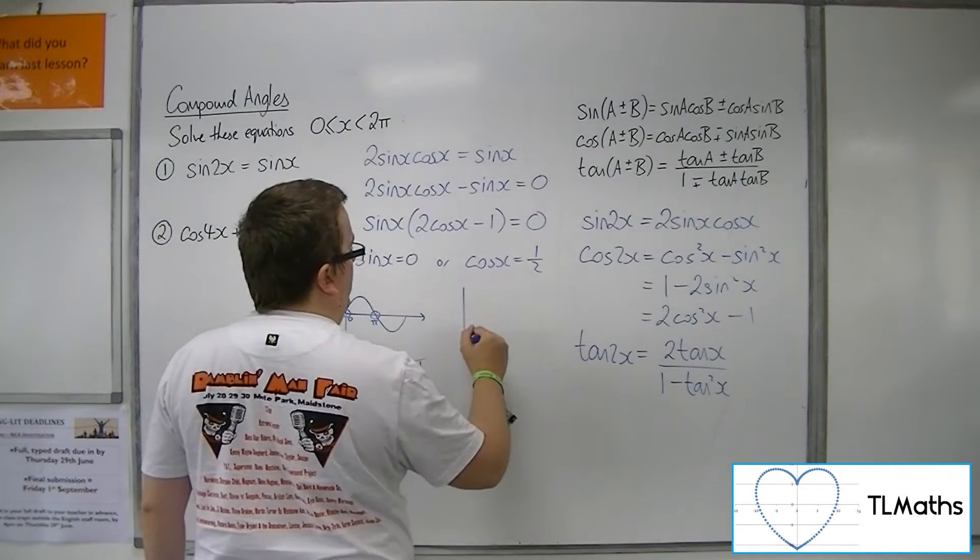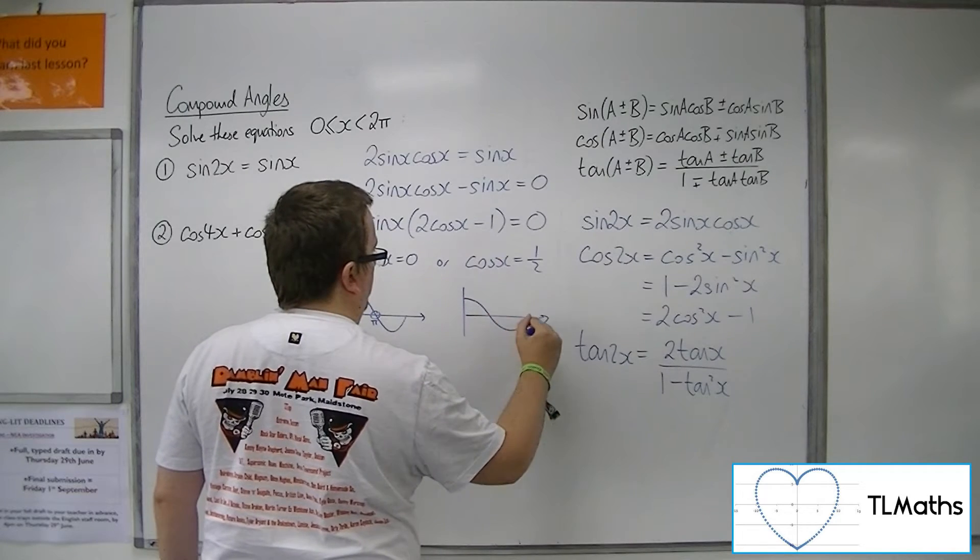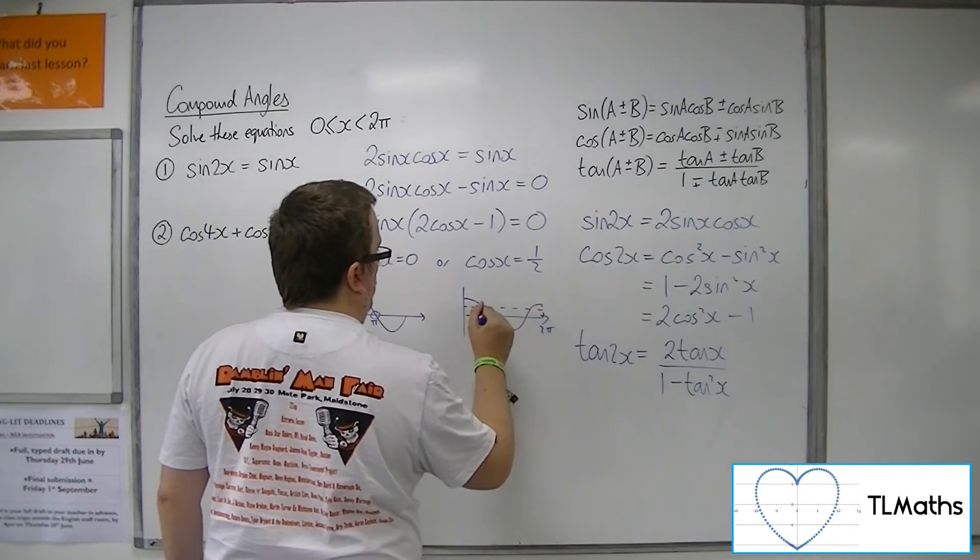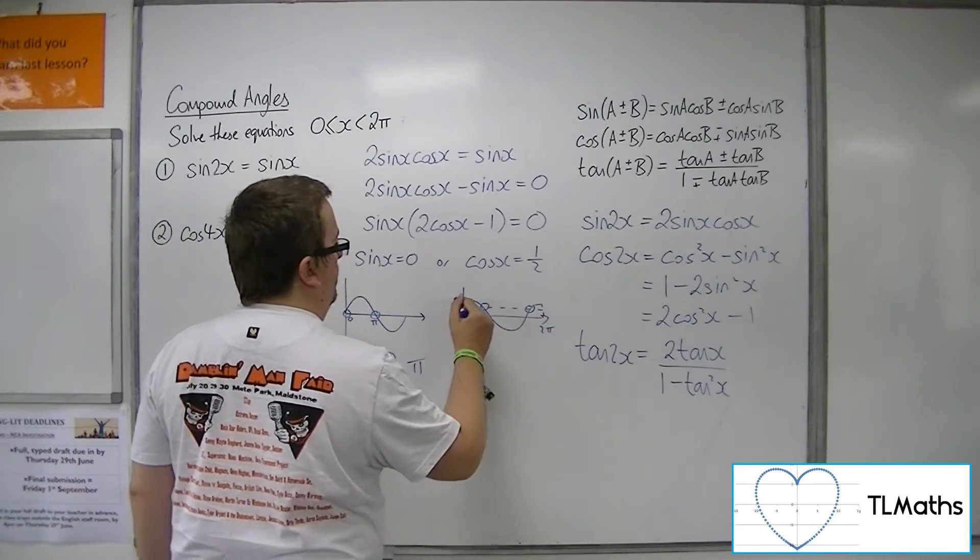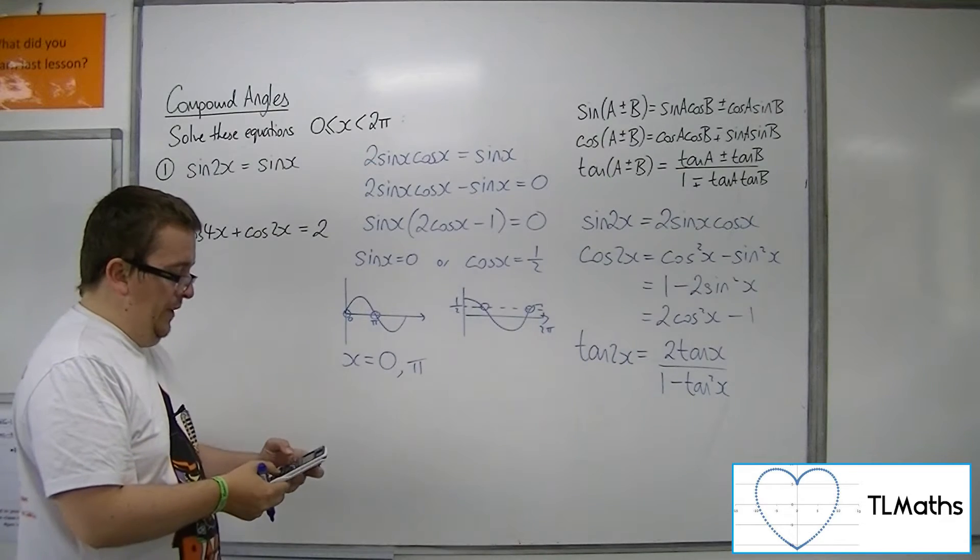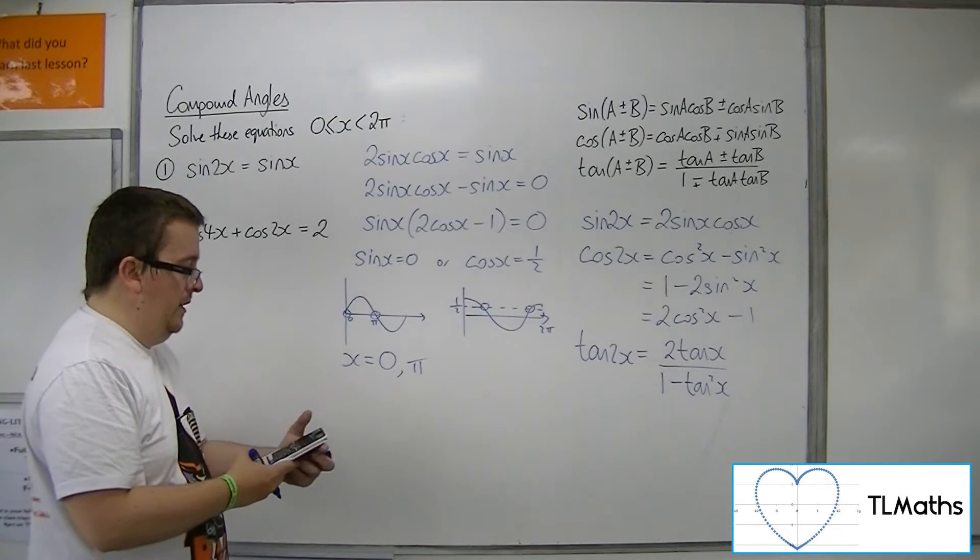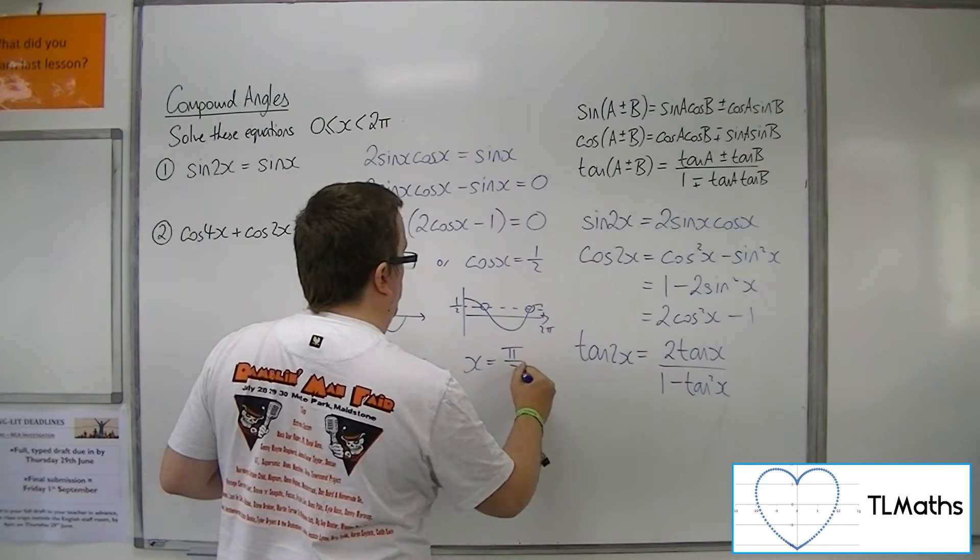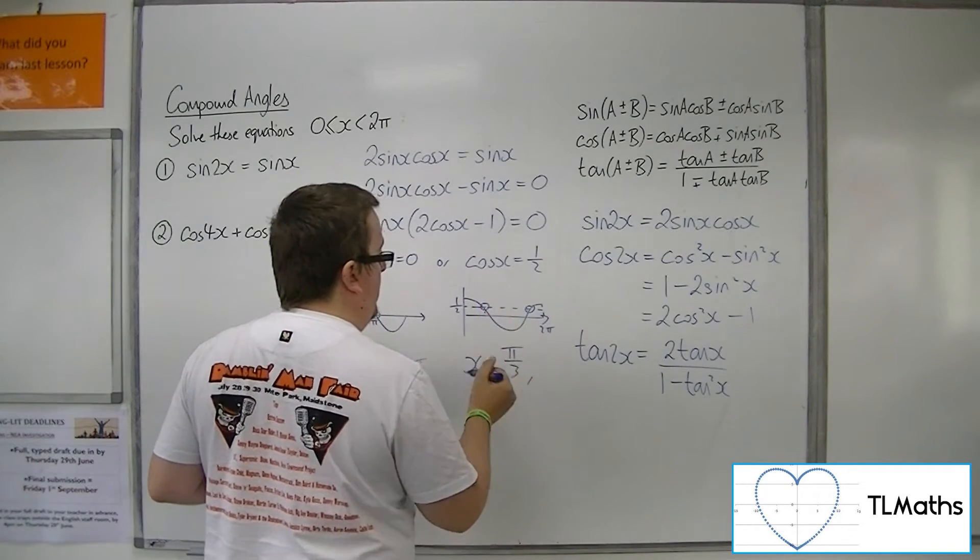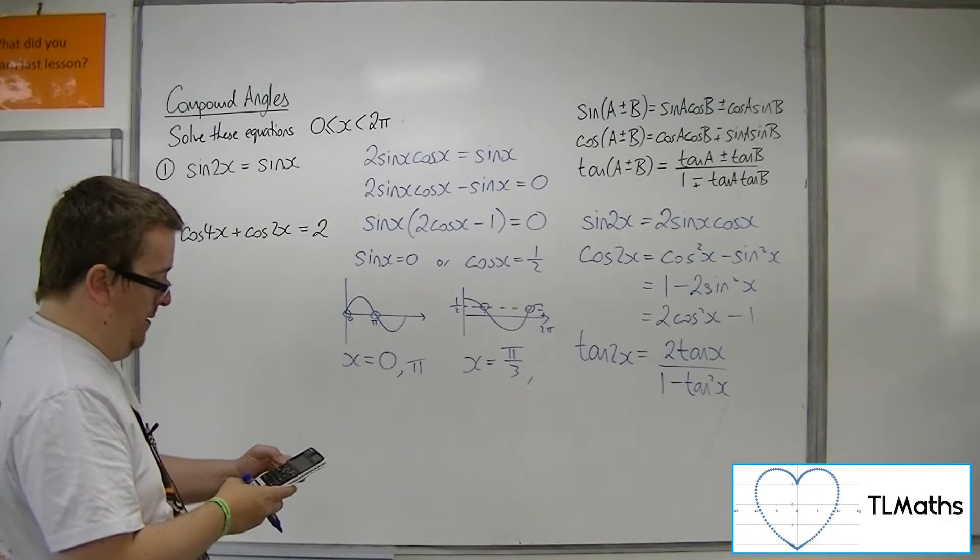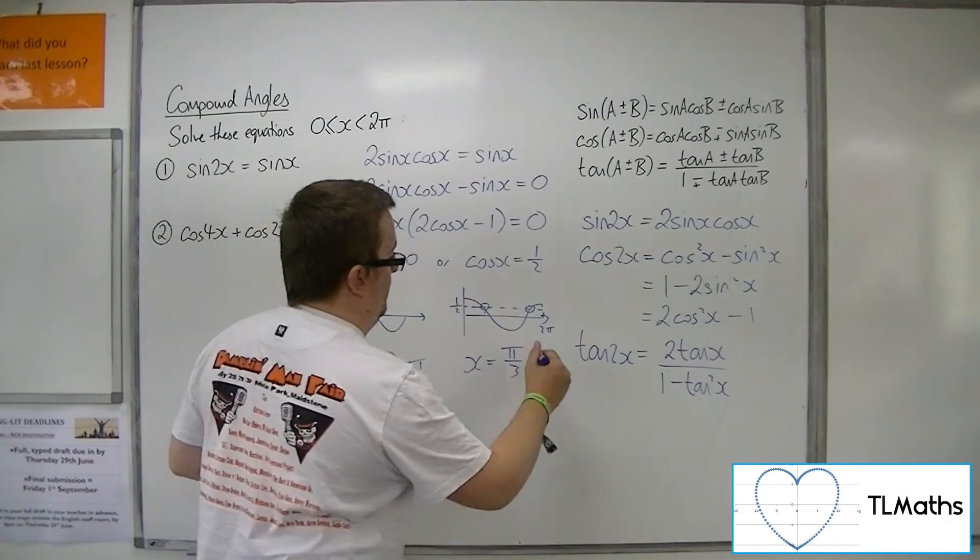Now in order for cos x to be a half, between 0 and 2π, we're expecting two possible solutions. So inverse cosine of a half is π over 3, so x is π over 3. That's that solution there. And the other solution will be 2π take away π over 3, so 5π over 3.